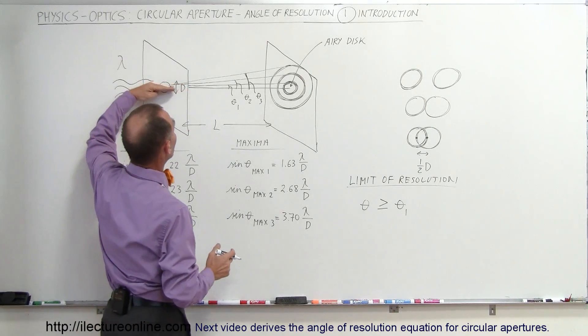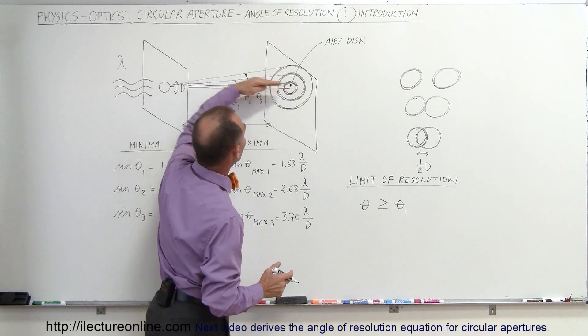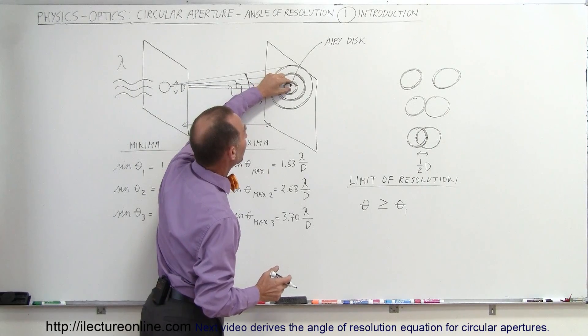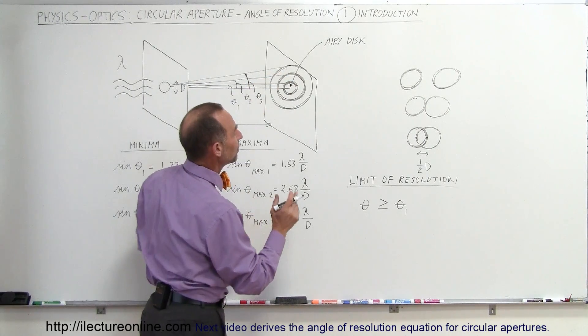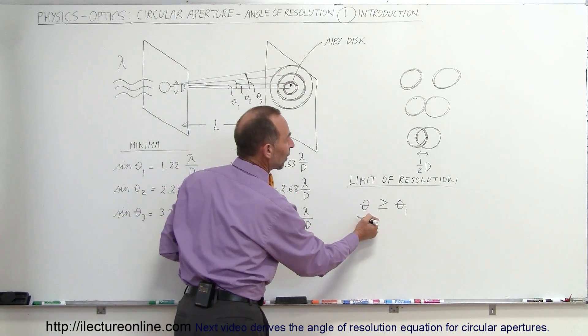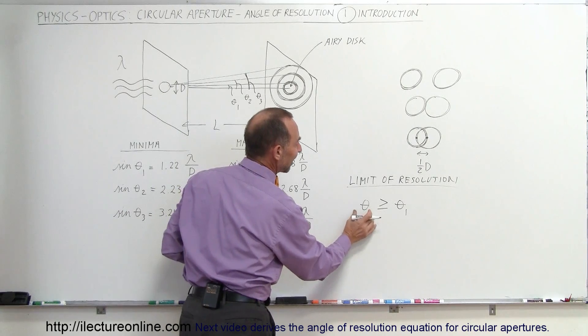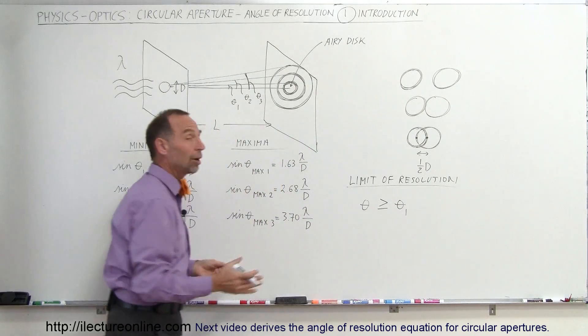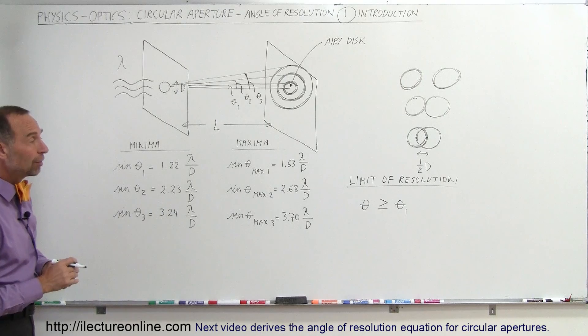Notice that it's the distance, it's the angle from the point to the very center, to the first minimum, that would be half the diameter, and that would then be the limit of resolution. If it's less than theta sub 1, we can no longer resolve it. If it's greater, we can resolve it. So that's the basics.